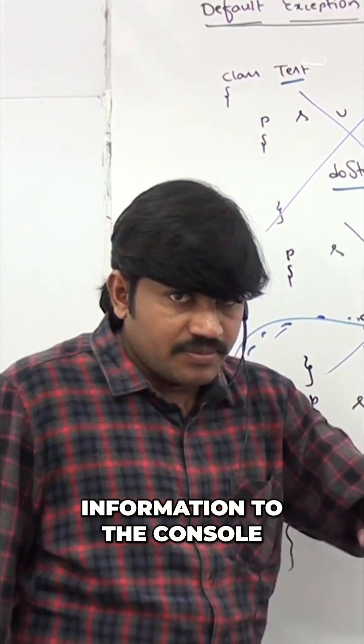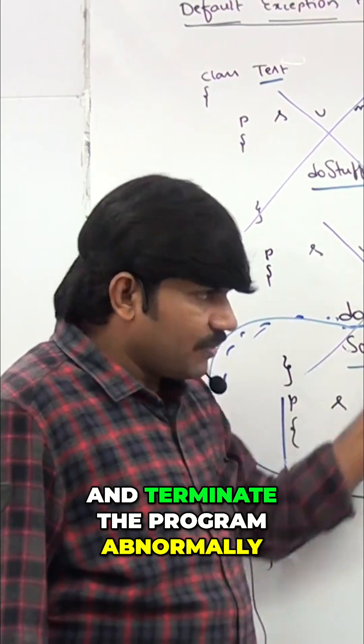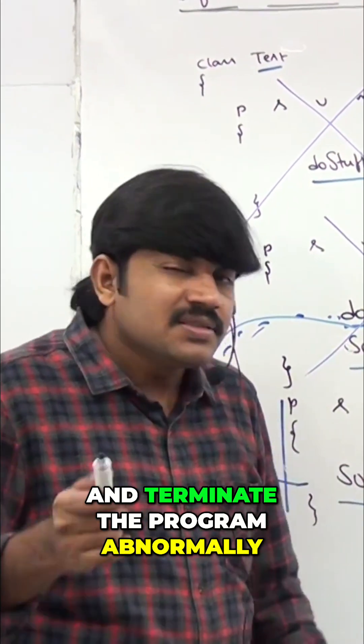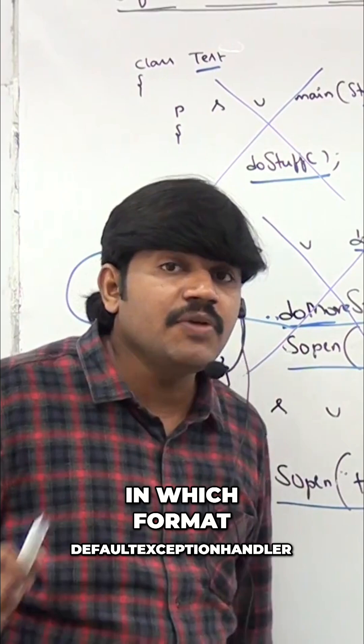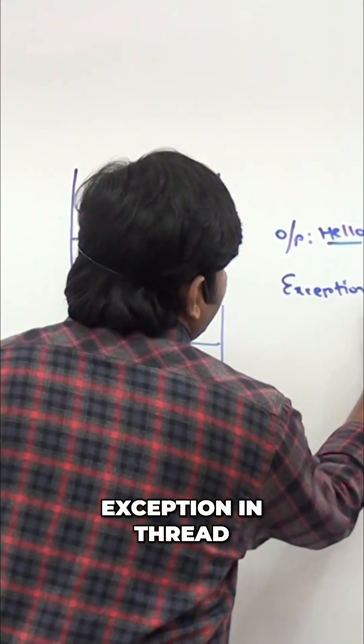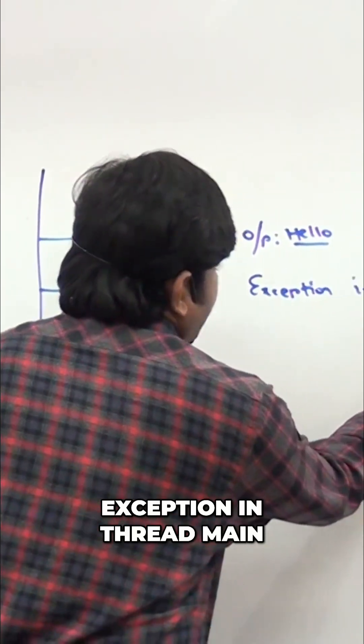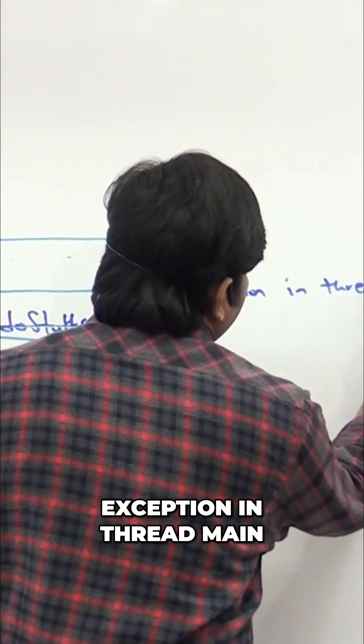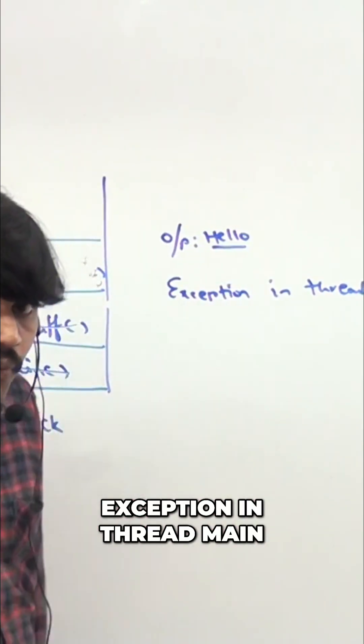the exception information to the console and terminates the program abnormally. Sir, in which format will the default exception handler print exception information? Exception in thread main. What is the name of the exception?